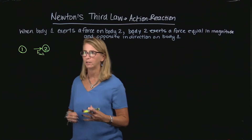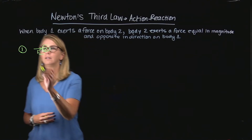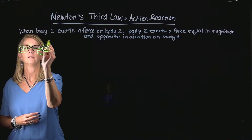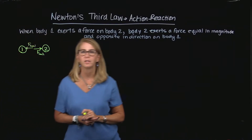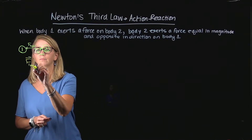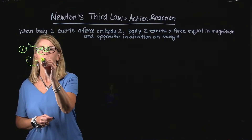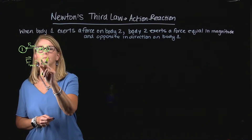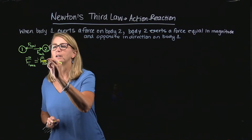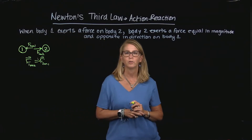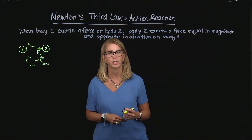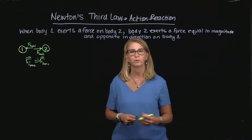And what we're saying then is, in reaction to that, Newton found that body 2 will exert a force that's equal in magnitude and opposite in direction. So the force of 1 on 2 is equal and opposite to the force of 2 on 1. Because I'm writing them as vectors, I put in the negative sign to indicate that the direction of the two vectors is opposite.